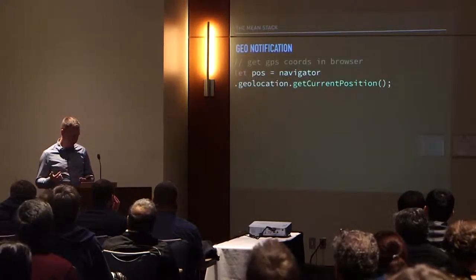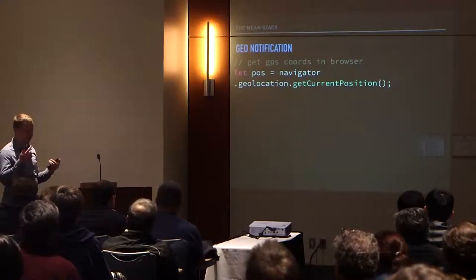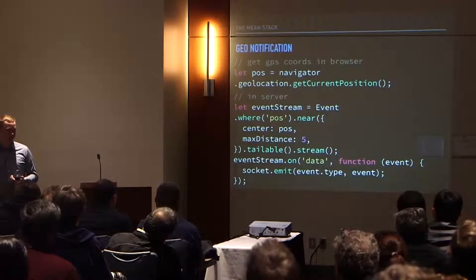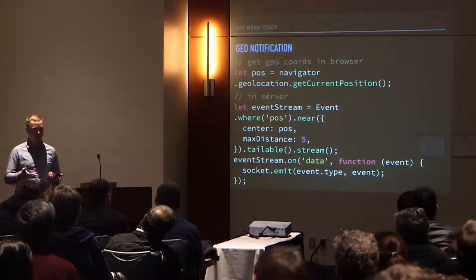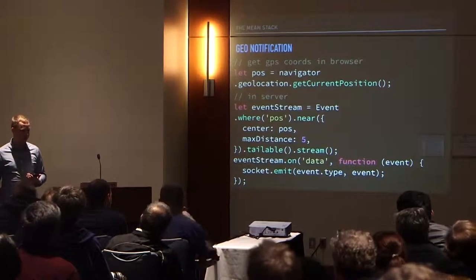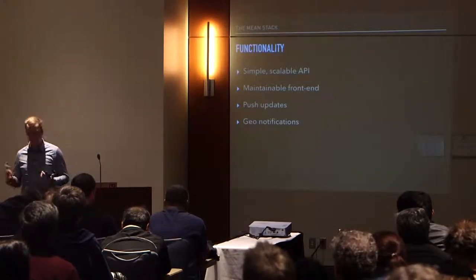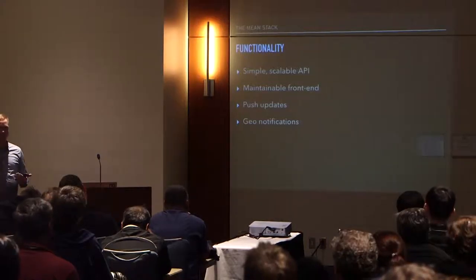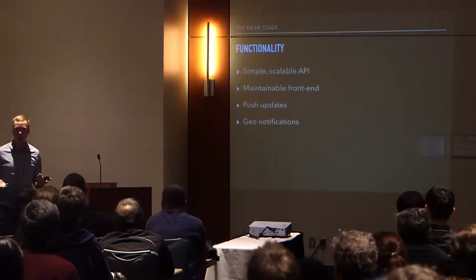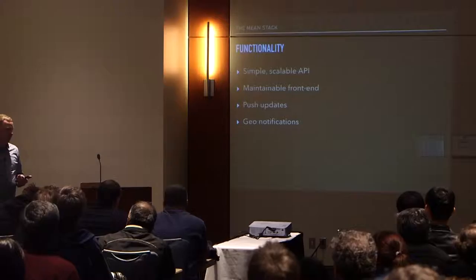Another idea is if you get the geo coordinates — which is really simple to do in HTML5 — as long as I store those geo coordinates in an event, I can query by saying 'dot near' those GPS coordinates and look within five miles or whatever to see if there's anything happening near me. With all this in place, we have a really simple, scalable, maintainable API, and the same on the front-end — testable and easy to manage. If we wanted to scrap the front end and write this as a mobile app, nothing on the back end would have to change. We get push updates so the user can be notified of any arbitrary event, and we can even extend this to geo.